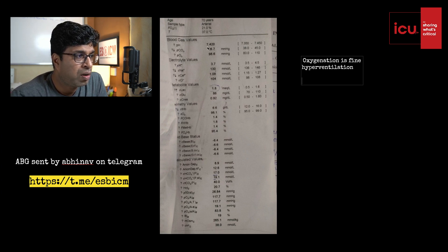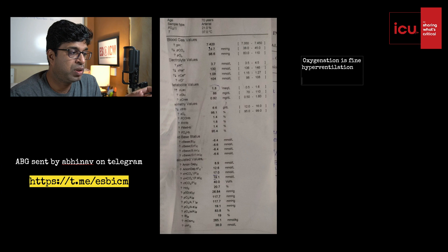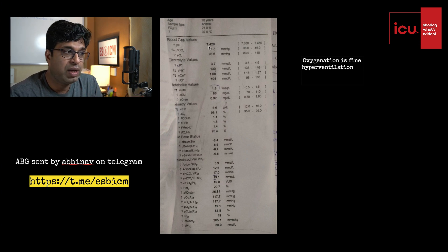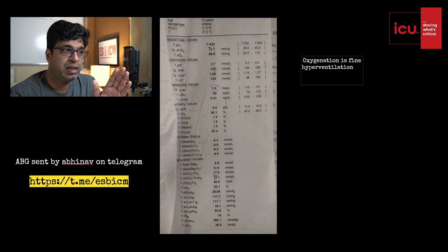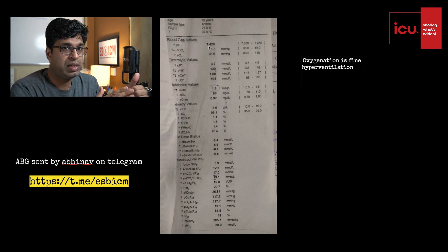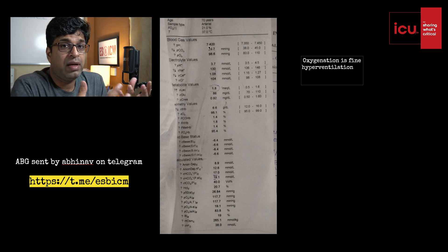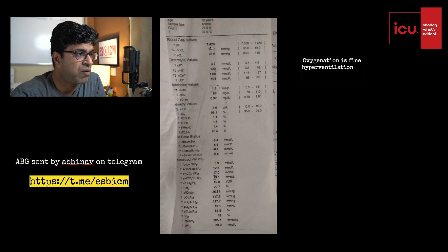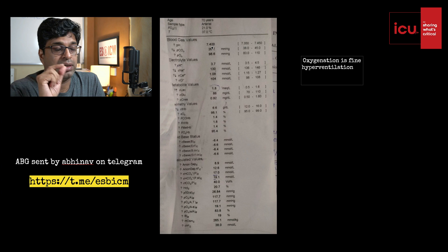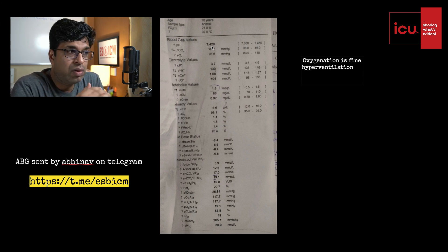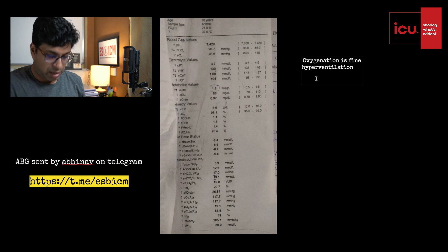For advanced ABG solvers, you should take 7.4 as the cutoff — the neutral point. Normally 7.35 to 7.45, but anything below 7.4 is acidemia and above 7.4 is alkalemia when compensation is present. Here, the pH is 7.42, so the primary disorder is alkalotic. For alkalosis, either PCO2 should go down or bicarbonate should go up, so we have identified that alkalosis is present.